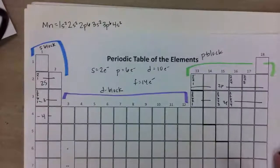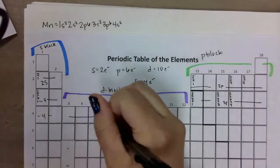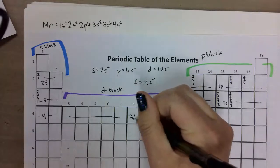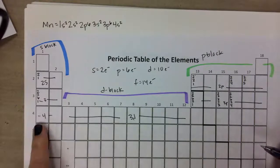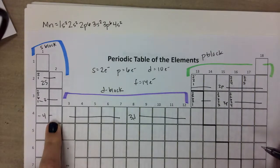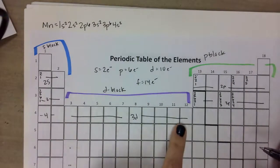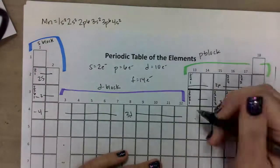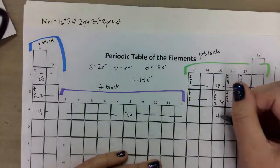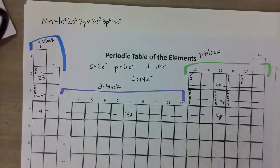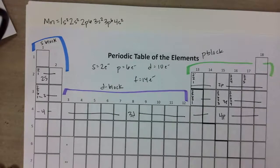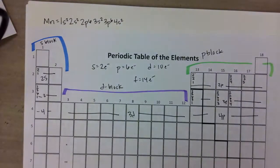On this periodic table, and all periodic tables in fact, the d shells are one energy level behind. So we go 4s and then it's 3d, and then over here past the 3d shell is our 4p shell. When we talk about our d shells, the d shells, even though they have a number 3 by them, show up in the fourth energy level. I will go over why that is in just a second.